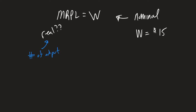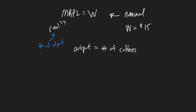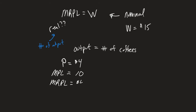What exactly does that mean? Let's do a quick example. Let's say that our output is going to be equal to the number of coffees. So let's say we work at a local coffee shop. Let's look at a scenario where the price of a coffee is $4 and we hire somebody whose marginal product of labor is 10. So we know our marginal revenue product of labor is going to be $40.